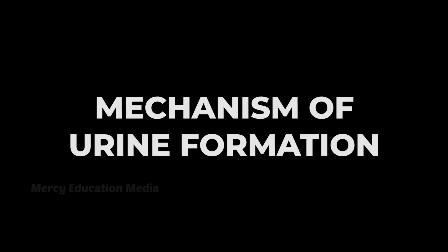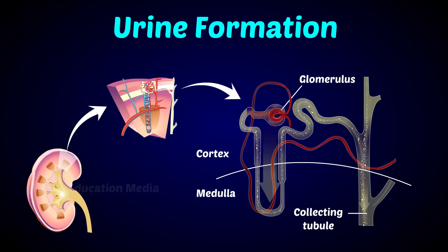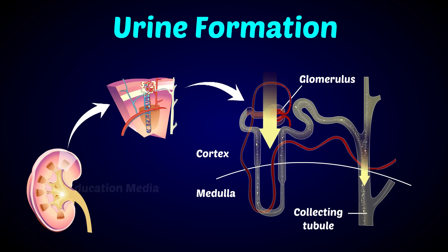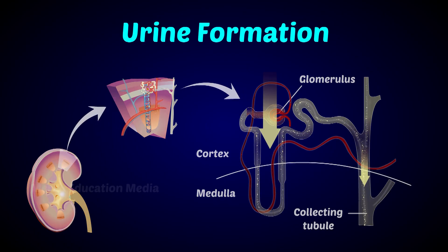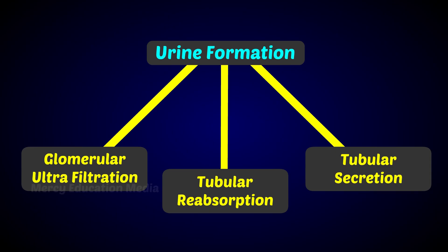Urine is continuously formed by each nephron. The processes involved in the formation of urine are glomerular ultrafiltration, tubular reabsorption, and tubular secretion.